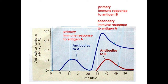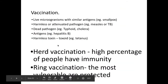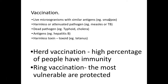Here are a couple of things that we could be vaccinated against that could cause a primary or secondary immune response. We can use live microorganisms with similar antigens to what we want to vaccinate against, such as smallpox. We've got harmless pathogens such as measles or TB. We can have dead pathogens such as typhoid or cholera, just antigens on their own such as hepatitis B, and we can also use harmless toxins, such as in tetanus.